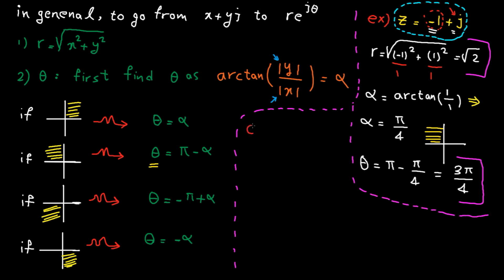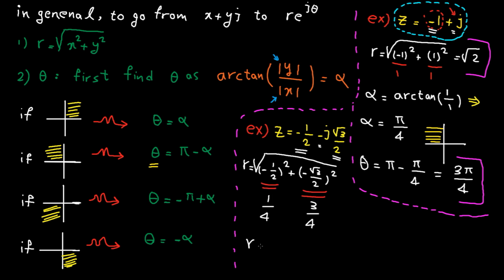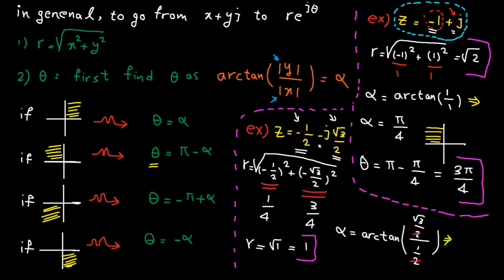Next example: this complex number is given and the question is what is the polar representation? This is x and this is y. Finding the radius is very easy — here we get 1. Let's find the angle. First, ignore the signs and find alpha: arctangent of the imaginary part divided by the real part. We get pi divided by 3.